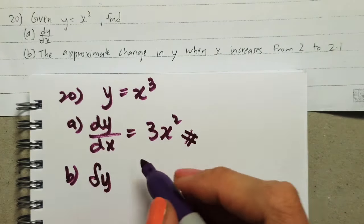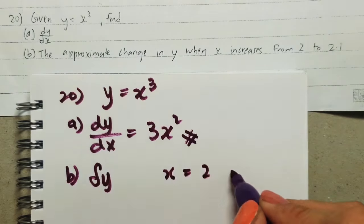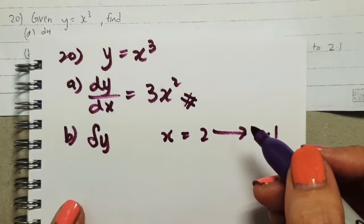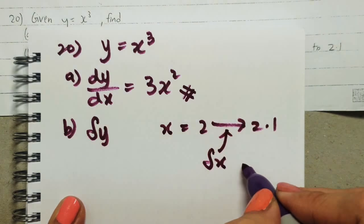Now part b. It says we need to find the approximate change in y, that means we need to find the small changes in terms of y when our x increases from 2 to 2.1. So from here we get our small change in x, which is 0.1.